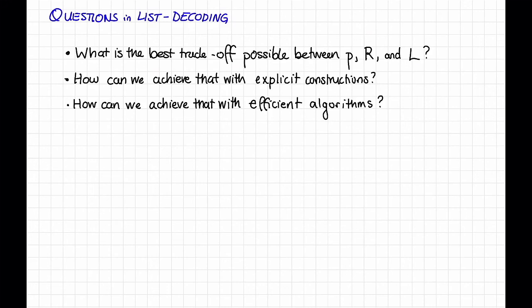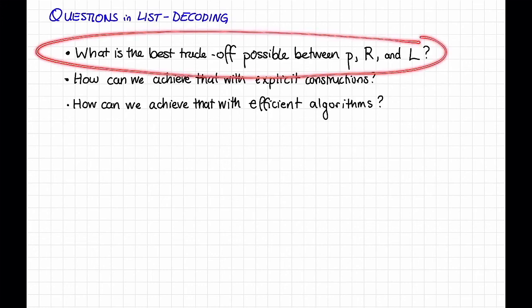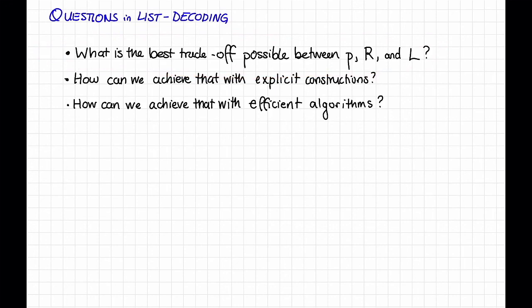With unique decoding, that is, when L equals 1, for worst case errors, we saw that this question was already really hard. That is, it's still open, at least for binary codes, what the best tradeoff is between P and R, even just for L equals 1. So it might seem like we're asking for trouble generalizing this question and hoping to do better, but it turns out that actually when L is allowed to be a little bit larger, say some large constant, or slightly growing with N, it turns out that we can actually pin down the best possible tradeoff between P and R. And it looks just like the best possible tradeoff for random errors that we saw in a previous video. This result about the best possible tradeoff between P and R for list decoding is called the list decoding capacity theorem, and we will see it in the next video.